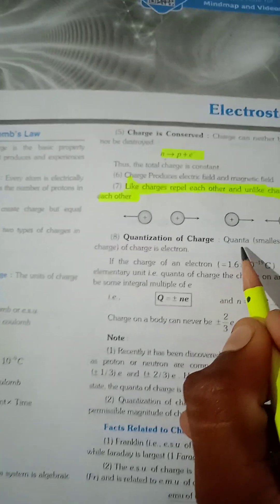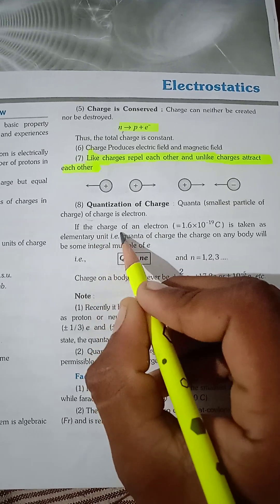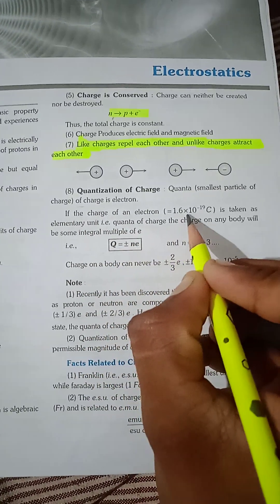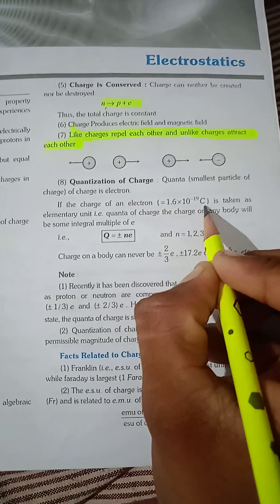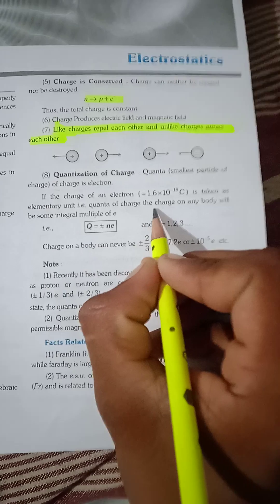Quantization of Charge: Quanta, smallest particle of charge, is electron. The charge of an electron is 1.6 into 10 to the power minus 19 coulombs, taken as the elementary unit. That is the quanta of charge.